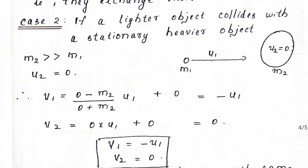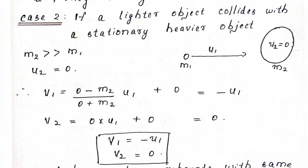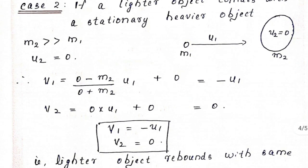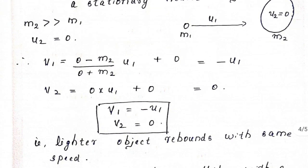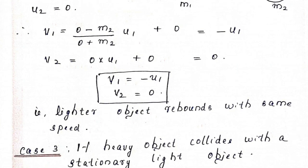Case 2: if a lighter object collides with a stationary heavier object. The lighter object is moving and the heavier object is at rest, so we have the condition m2 is very much greater than m1. We can neglect m1 in comparison with m2 and put m1 equal to 0. Substituting, we have v1 equal to minus u1 and v2 equal to 0. The second body continues to be at rest, and the lighter body rebounds in the opposite direction with the same speed.